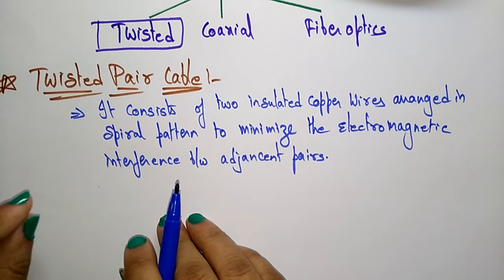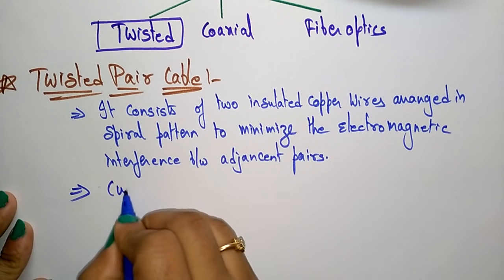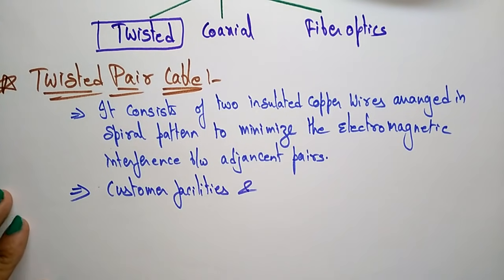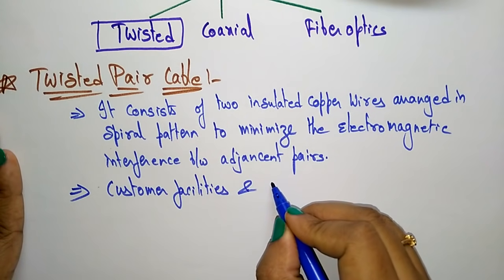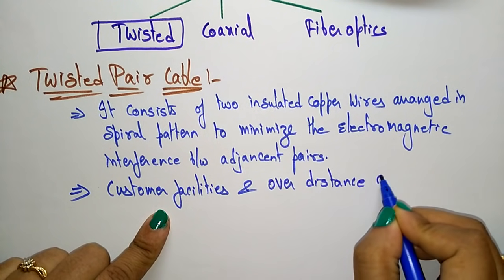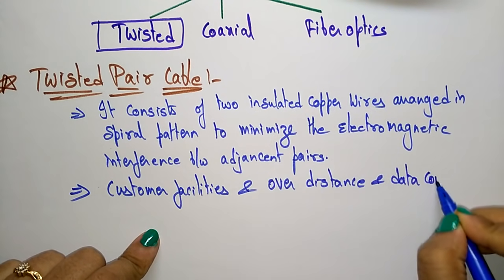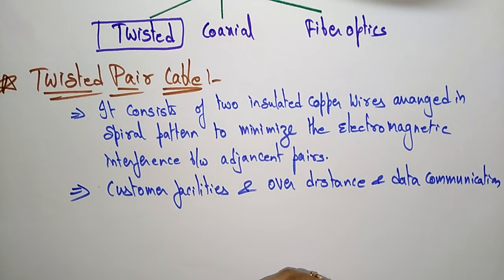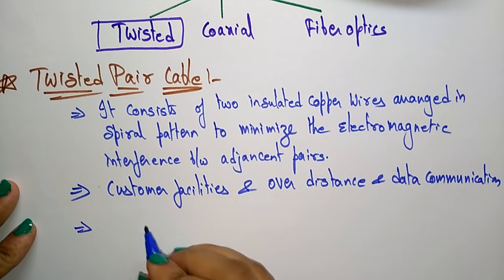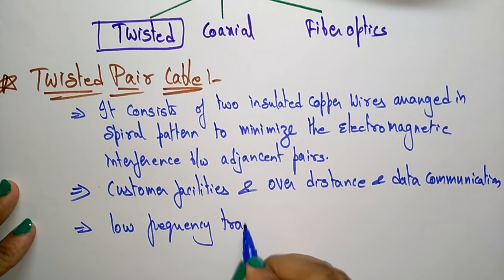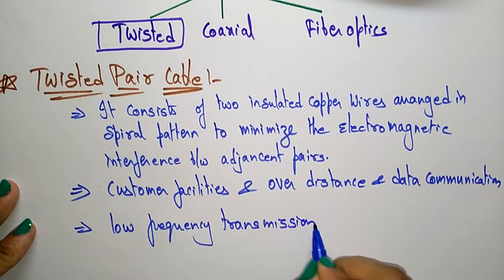It is often used for customer facilities and over distance to carry voice as well as data communications. We use this twisted pair for customer facilities and data communication. And the main thing is it is used for low frequency transmission medium.